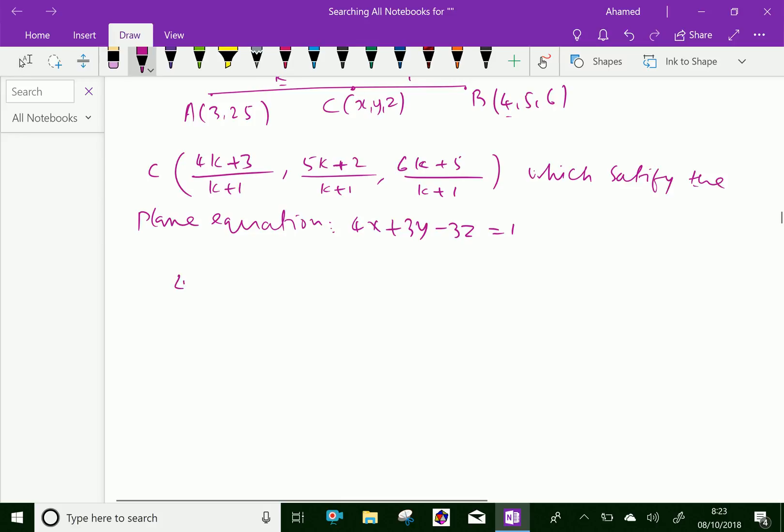That is 4 into x is (4k+3)/(k+1), plus 3 into y is (5k+2)/(k+1), and minus 3 into z is (6k+5)/(k+1) equal to 1.